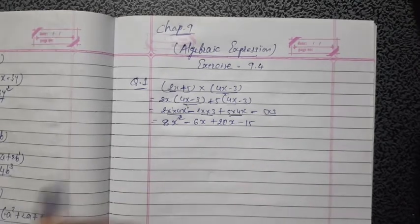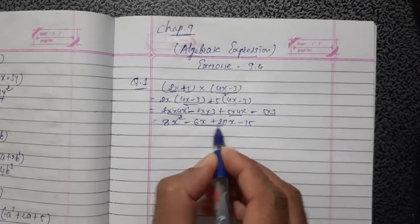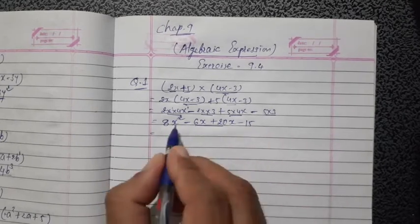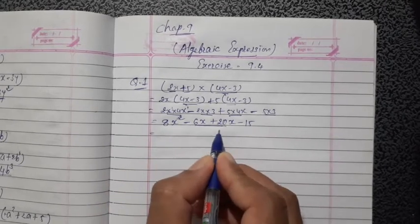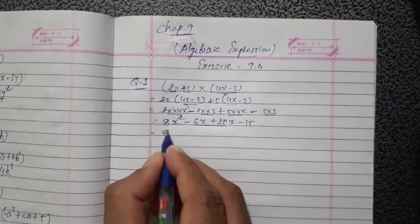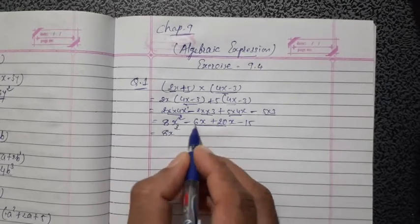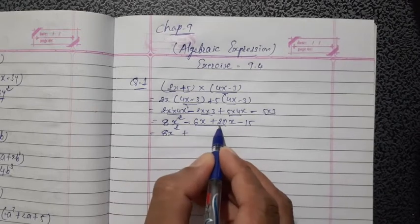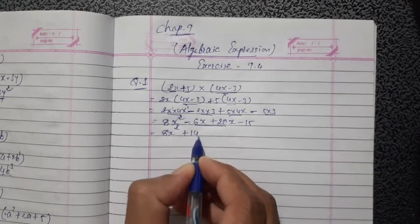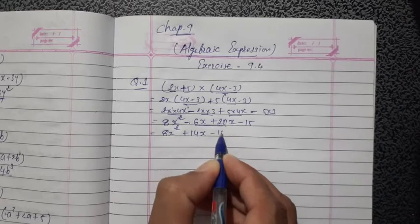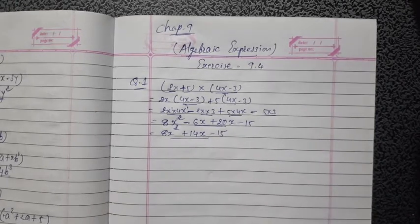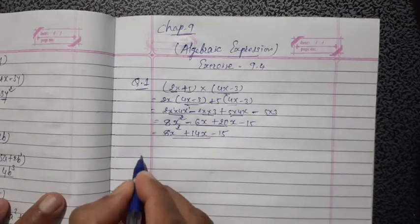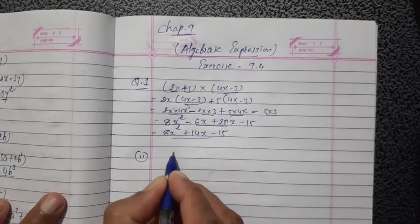Now check for like terms. Yes, minus 6x and plus 20x are like terms. Simplify them. Single terms write as usual. So the answer is 8x squared, and 20 minus 6 is 14x, minus 15. That's your answer.